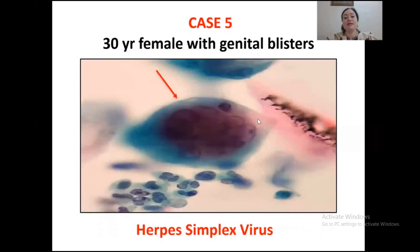Case five had genital blisters. In the center, one may see large squamous epithelial cells with multi-nucleation, molding of the nuclei, margination of chromatin, and ground-glass nuclei with a perinuclear halo. The diagnosis was Herpes simplex virus.